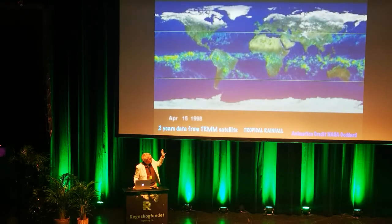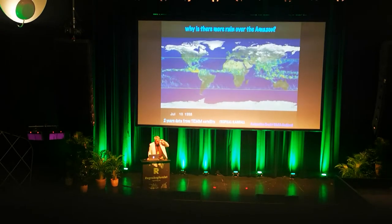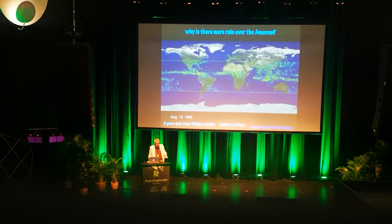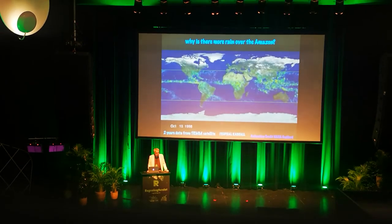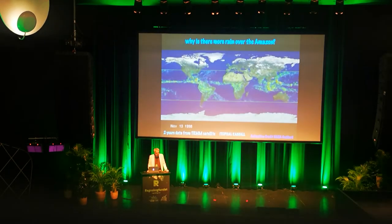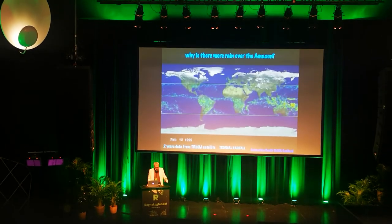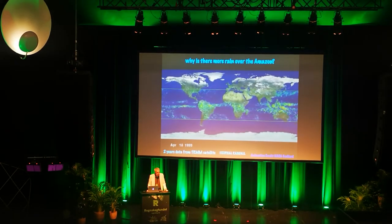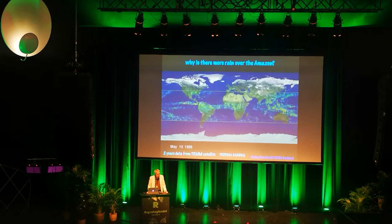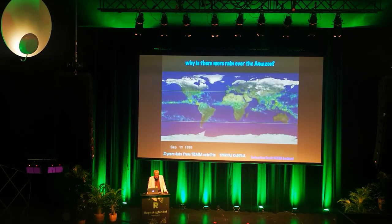Evaporation must have compensation, and this image shows satellite meteorological radar data showing which clouds are raining. You can see there is much more rain over the Amazon than over similar latitudes over the oceans.